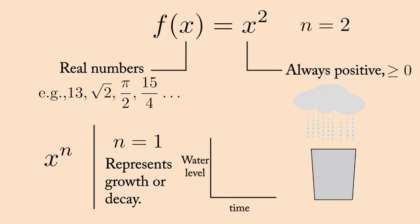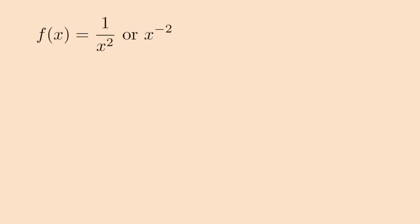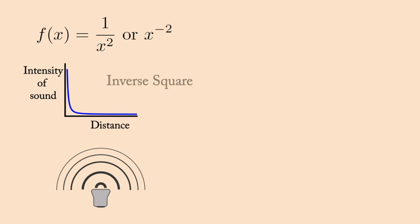If you leave an empty bucket in a steady rain, the water level will rise at the bottom of the bucket linearly in time. Setting n equals to minus 2 will yield the inverse square function, which describes how intensity of sound decreases with distance.